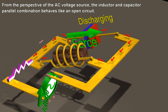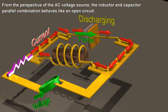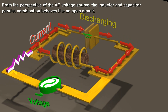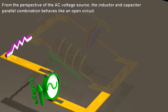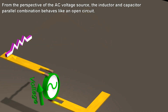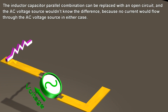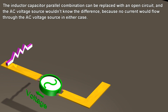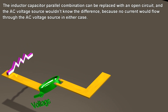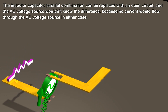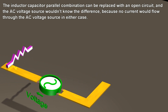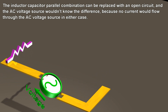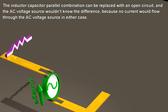From the perspective of the AC voltage source, the inductor and capacitor parallel combination behaves like an open circuit. The inductor-capacitor parallel combination can be replaced with an open circuit, and the AC voltage source wouldn't know the difference, because no current would flow through the AC voltage source in either case.